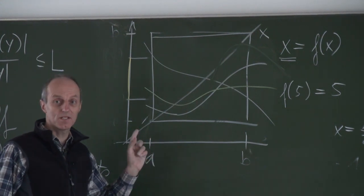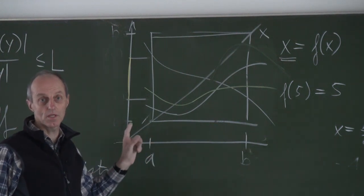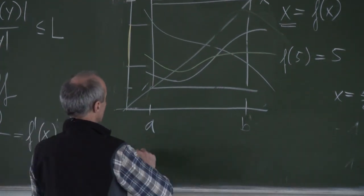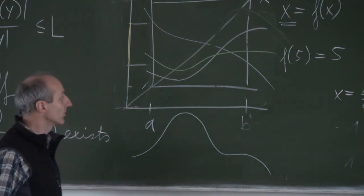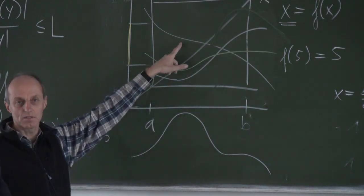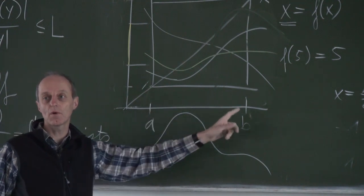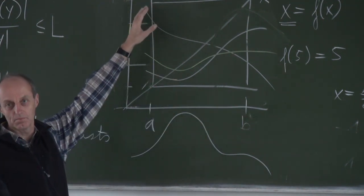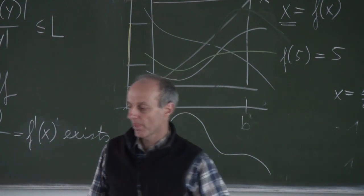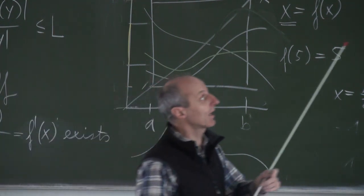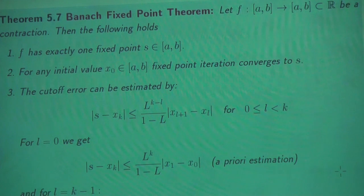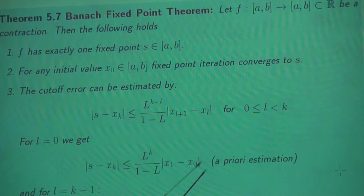Be careful and never forget that this is a square: the function must map interval a, b onto a, b. As soon as you forget that, you can draw functions with large slopes which have no fixed point. And for any initial value in the interval, the fixed point iteration converges to this unique fixed point.